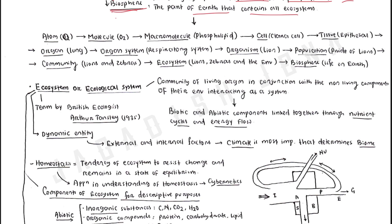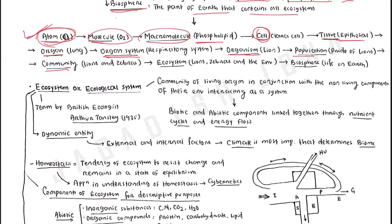If we study the dimension from the atomic level to the biosphere level: atoms form molecules, molecules form macromolecules like phospholipids, macromolecules constitute cells, cells form tissues like epithelial or connective tissue, tissues form organs like lungs, organs form organ systems like the respiratory or circulatory system, organ systems combine to form organisms, organisms combine to form populations, populations form communities, communities form ecosystems, and ecosystems form the biosphere.